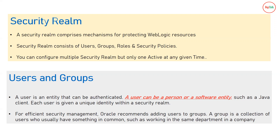The entity in WebLogic for dealing with users, groups, and security is called a realm. A realm consists of users, groups, roles, and security policies — every security-related setting defined in WebLogic is inside your security realm. You can configure multiple security realms, but only one is active at any given time. WebLogic comes with a default security realm that is sufficient most of the time.